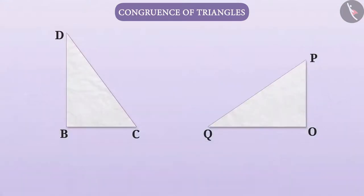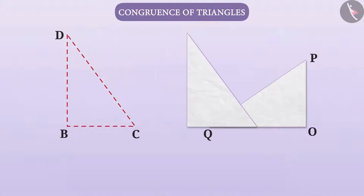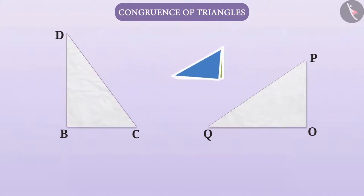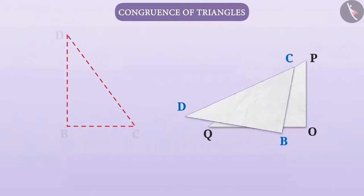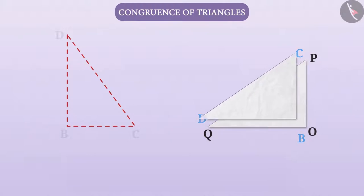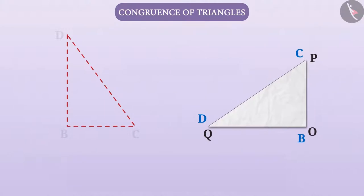If we cut these triangles, then their congruency can be checked by placing them one on top of the other. But we cannot place them one on top of the other as we wish. We also have to adjust them properly, keeping them one on top of the other so that they cover each other accurately. It is possible only when we place vertex B on O, vertex C on vertex P, and vertex D on vertex Q. Only when doing so, triangle BCD completely covers triangle OPQ, and it is clear that triangle BCD and triangle OPQ are congruent.